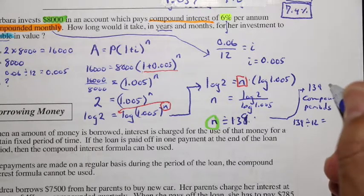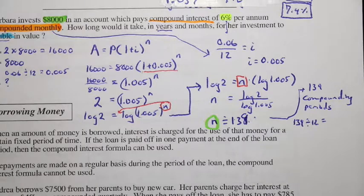Well, let's see. It's going to be 12. And what's the closest number that 12, 139 goes? So 139 divided by 12 is 11.58.